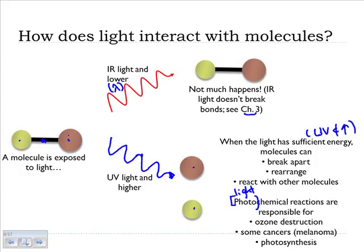These are the reactions that are responsible for the destruction of the ozone layer. They're also often responsible for some types of cancers, skin cancers, melanomas. The mutations start because there was a light-initiated chemical reaction that damaged your DNA.